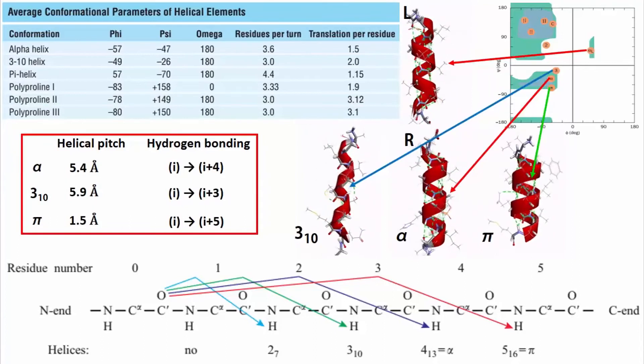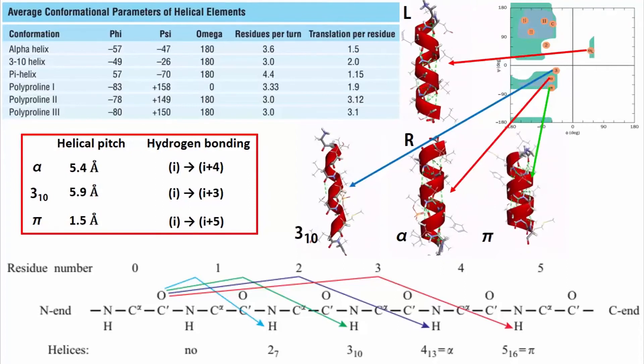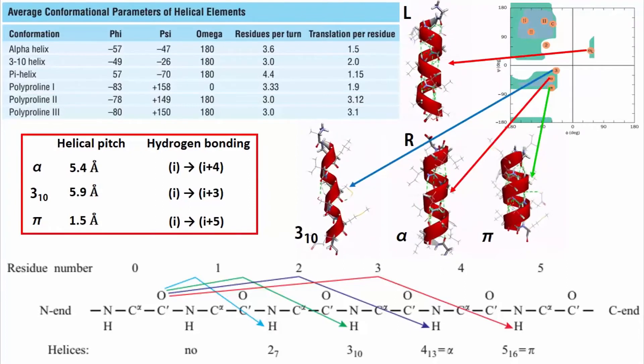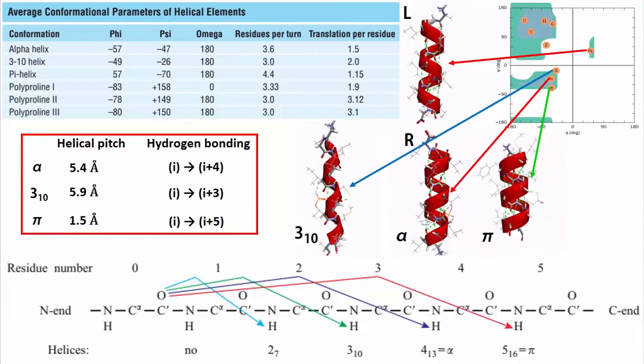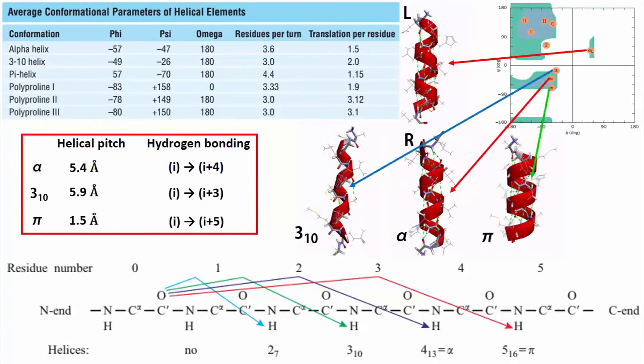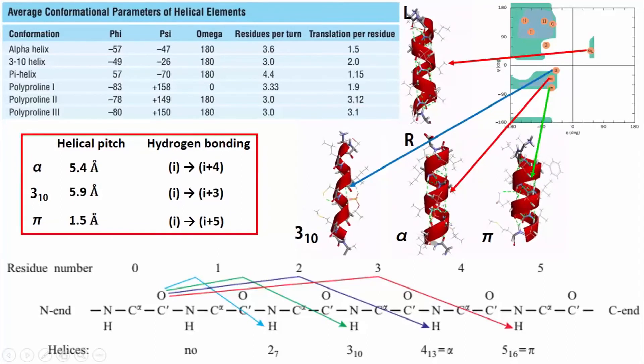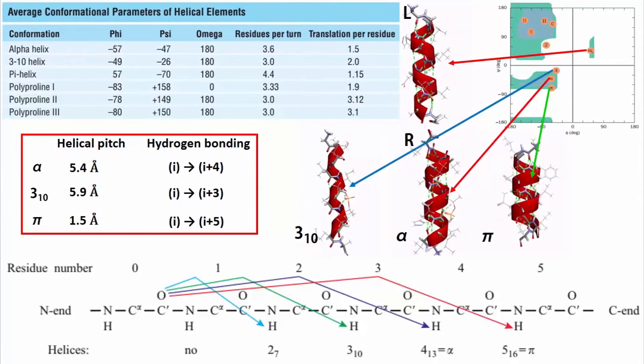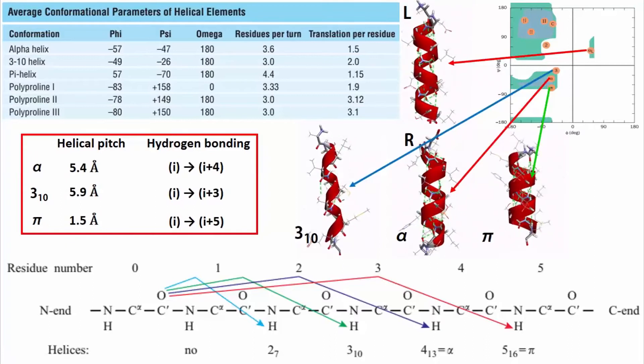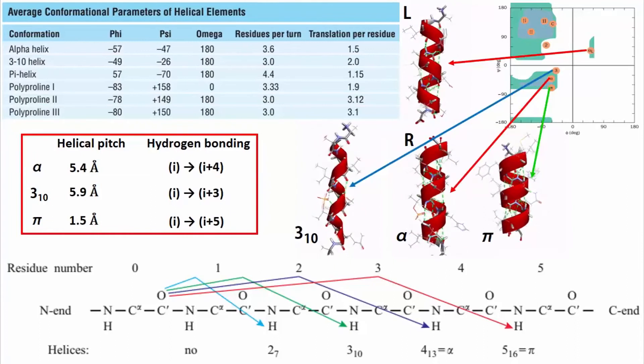Well, alpha helix is not the only type of helix observed in protein crystal structures. In fact, there are four major types of helices. These are right and left-handed alpha helix, 310 helix, and pi helix. You can see their molecular structures here. The helical view is superimposed on the backbones and side chains are shown as thin lines.